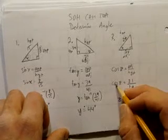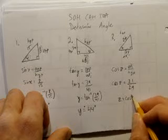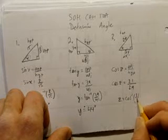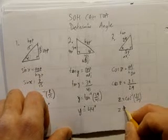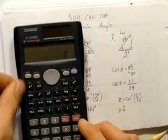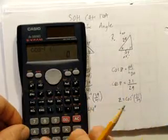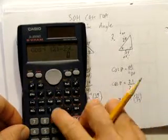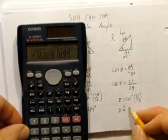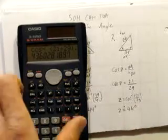To solve for z, we do the inverse of the cosine function. So z equals cosine to the negative 1 of 21 over 29. Going to be rounding again—pretty normal for trigonometry. Inverse cos, shift cos, open the brackets, 21 divided by 29. You get approximately—oh, also 44 degrees. That's just coincidence.